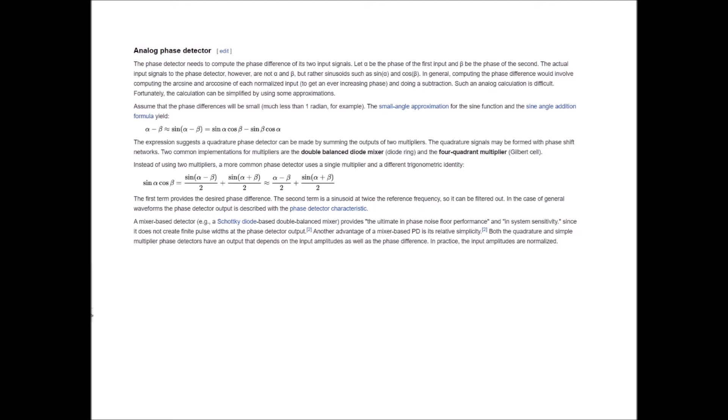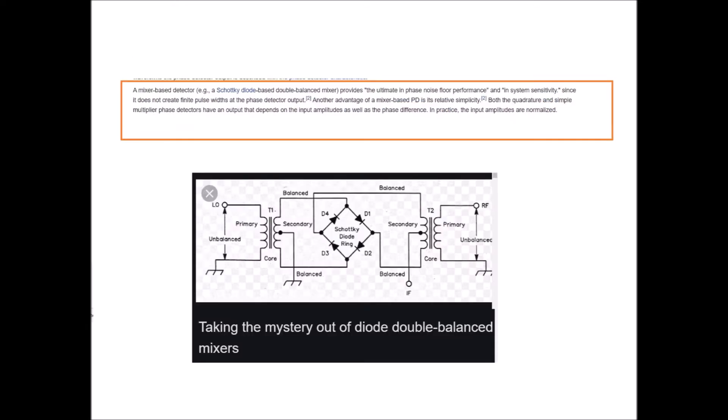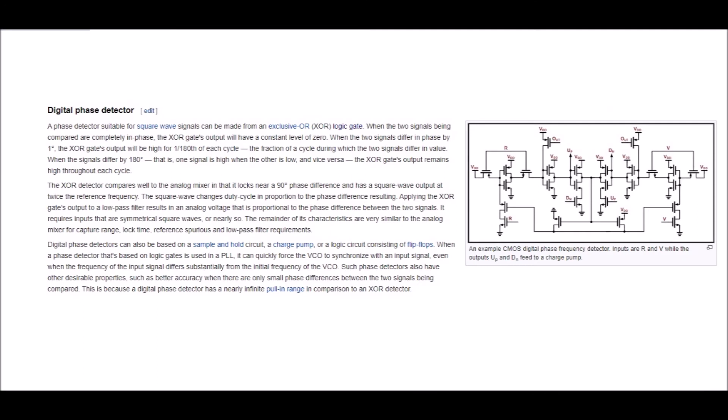Fortunately the calculation can be simplified by using some approximations. And it goes into some math and I didn't want that. A mixer based detector, example a Schottky diode based double balanced mixer, provides the ultimate in-phase noise floor performance and in-system sensitivity since it does not create finite pulse widths at the phase detector output. Another advantage of mixer based PD is its relative simplicity. Both the quadrature and simple multiplier phase detectors have an input that depends on the input amplitudes as well as the phase difference. In practice the input amplitudes are normalized.